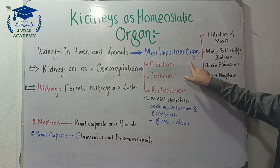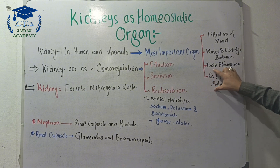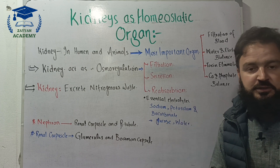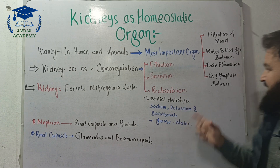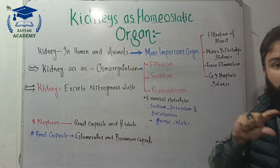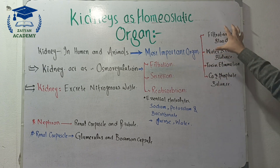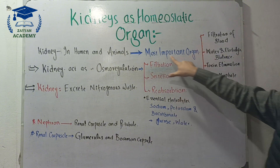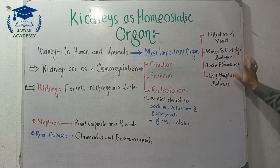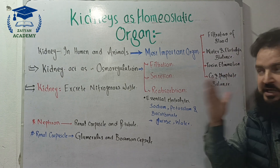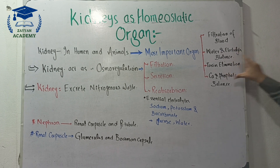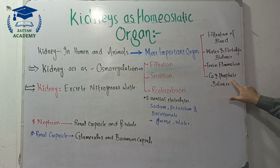Calcium and phosphate balance is extremely important — if calcium and phosphate balance is disrupted, it leads to serious bone problems. Sodium and chloride balance is also critically important. These are among the most important functions of the kidney as a homeostatic organ, including filtration of blood, water and electrolyte balance, and toxin elimination.